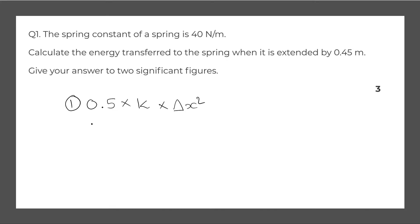So we have 0.5 multiplied by the spring constant which is 40 newtons per meter and it's in the correct units multiplied by 0.45 which is also in the correct units squared. Now we have our equation.